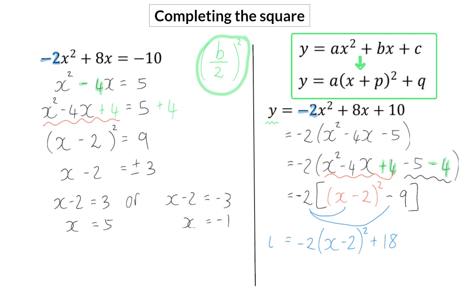And now that we have the equation in the turning point form, we can say that the turning point for this function is at 2 and 18, because I'm reminding you that the turning point is the p-value with the opposite sign and the q-value.